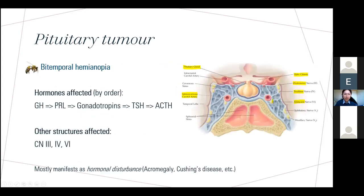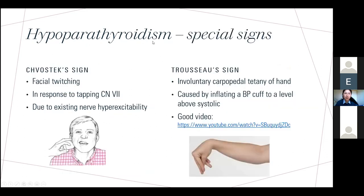Pituitary adenoma buzzword: bitemporal hemianopia — it's pressing on the optic chiasm. The prolactinoma is the most common pituitary adenoma. Regarding hypoparathyroidism and hypocalcaemia: giveaway signs are facial spasm, convulsions, and tetany — classic signs of hypocalcaemia.